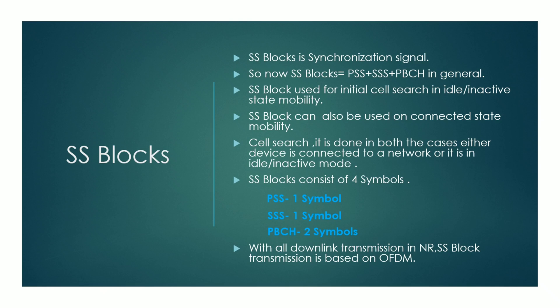The first thing we will come to know is what is SS block. SS block is basically the synchronization signal block, and it consists of PSS, SSS, and PBCH. This SS block is used for the initial cell search in both idle/inactive mode and connected mode. The SS block consists of four symbols: PSS consists of one symbol, SSS consists of one symbol, and PBCH consists of two symbols.